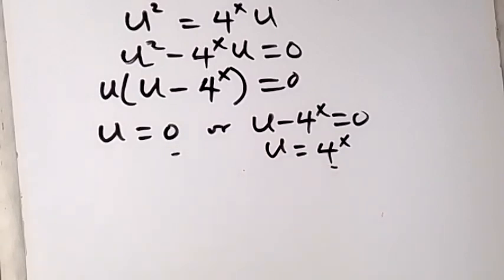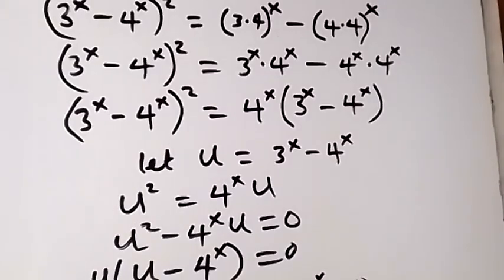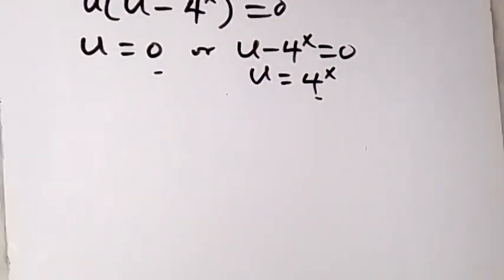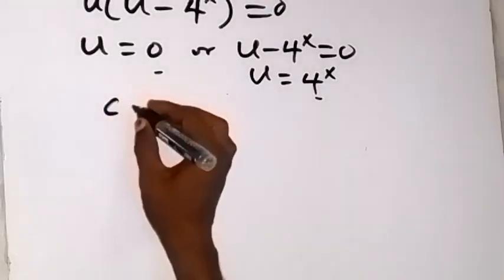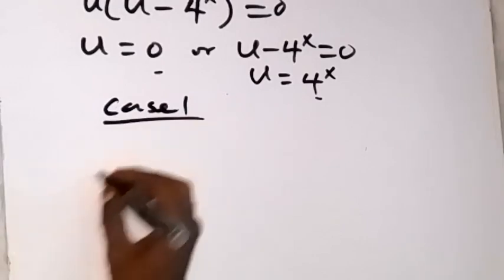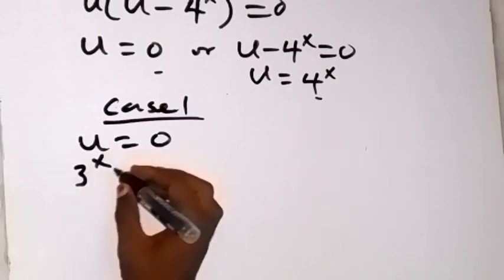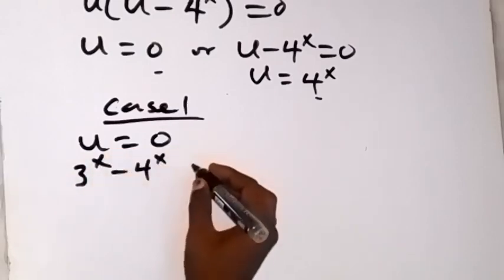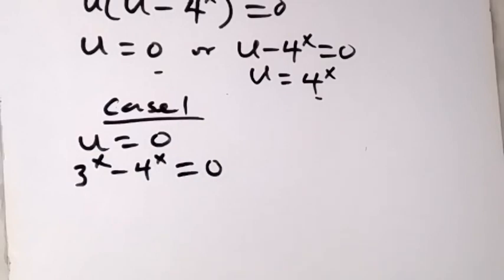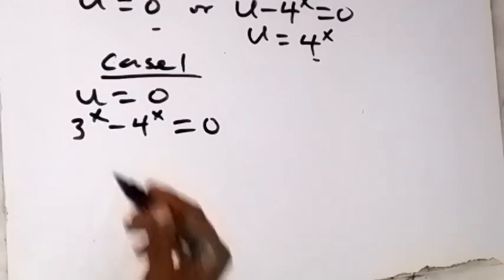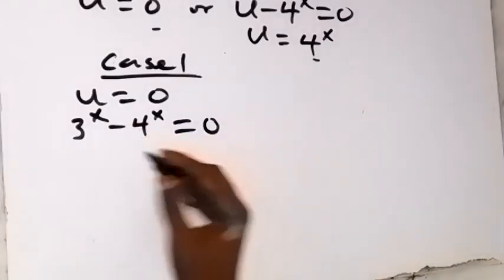Don't forget our u is defined as 3 raised to power x minus 4 raised to power x. For Case 1, u equals 0, which means 3 raised to power x minus 4 raised to power x equals 0. To find x, take minus 4 raised to power x to the other side, giving 3 raised to power x equals 4 raised to power x.